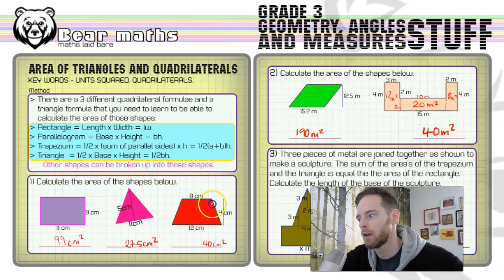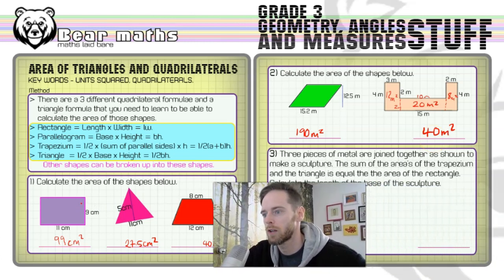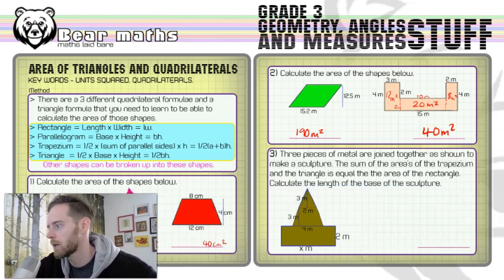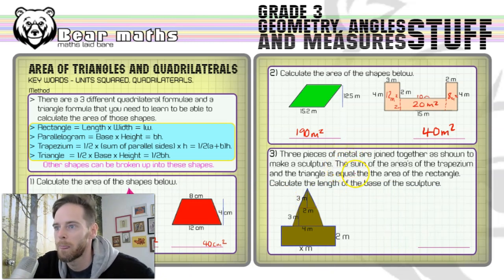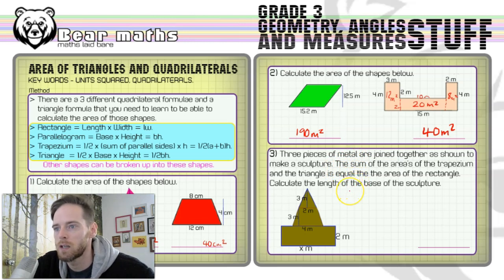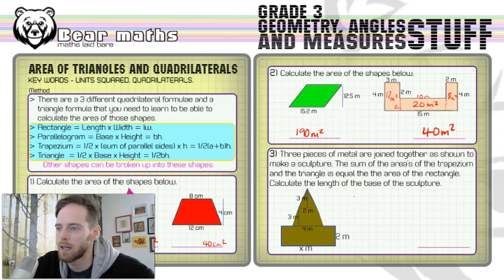On to the third and final question. Three pieces of metal are joined together to make a sculpture. The sum of the areas of the trapezium and the triangle equals the area of the rectangle. We need to calculate the length of the base of the sculpture.